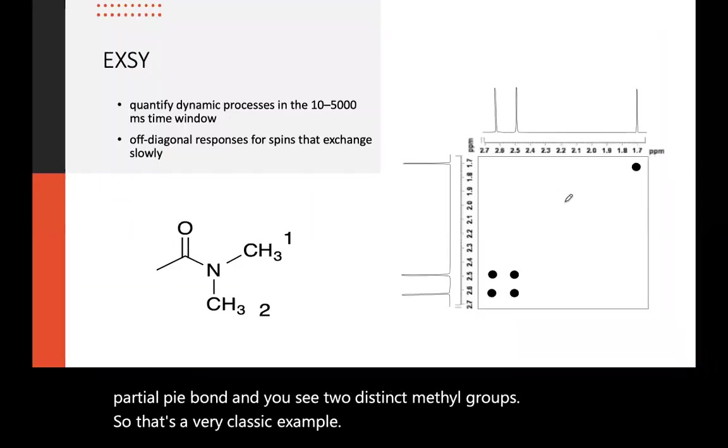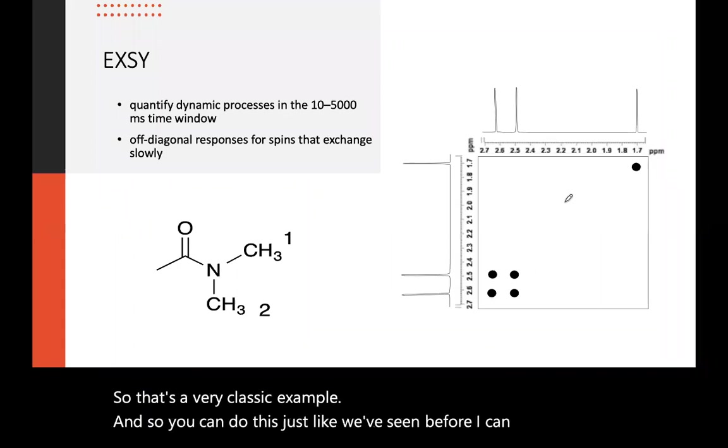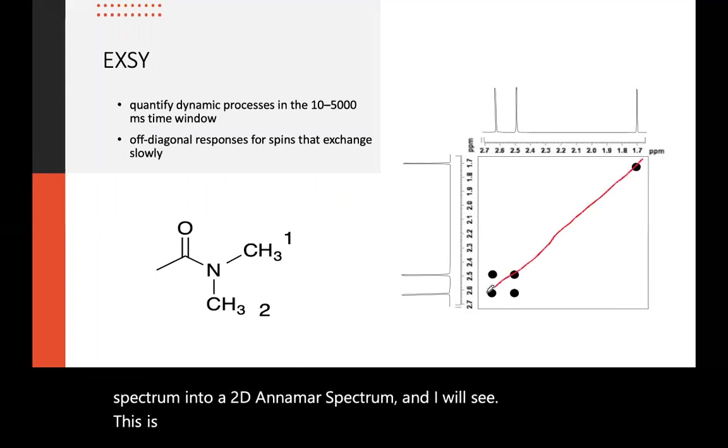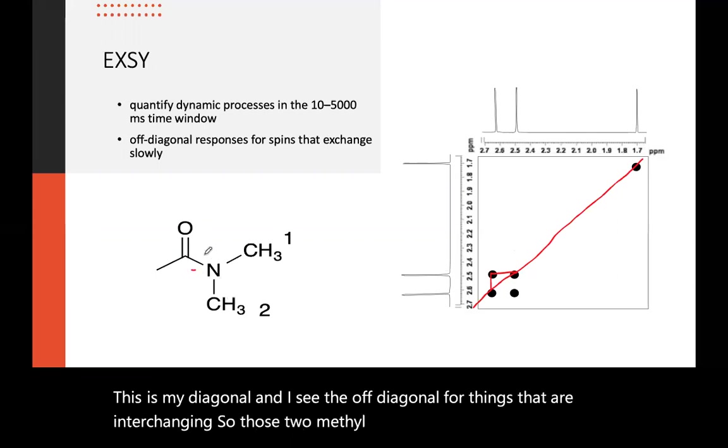And so you can do this just like we've seen before, I can convert this spectrum into a 2D NMR spectrum. And I will see this is my diagonal. And I see the off diagonal for things that are interchanging. So those two methyl groups are interchanging slowly around this bond, depending on the temperature.